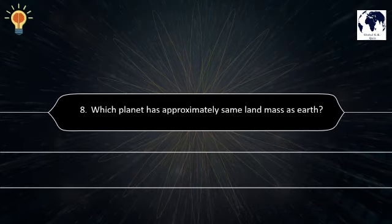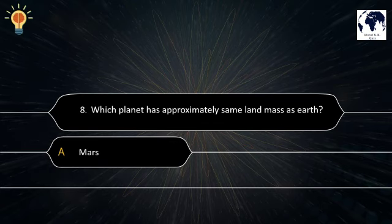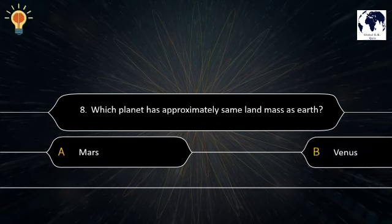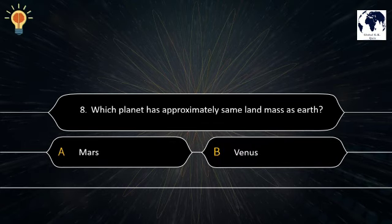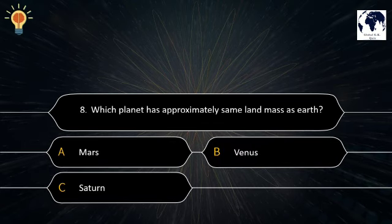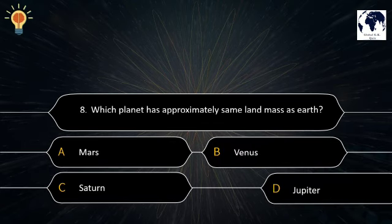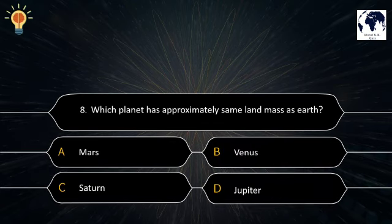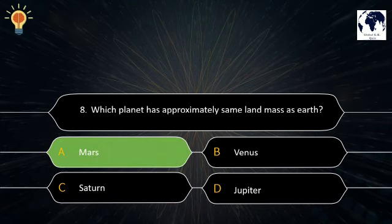Question number 8. Which planet has approximately the same landmass as Earth? Option A: Mars. Option B: Venus. Option C: Saturn. Option D: Jupiter. The correct answer is Option A — Mars.